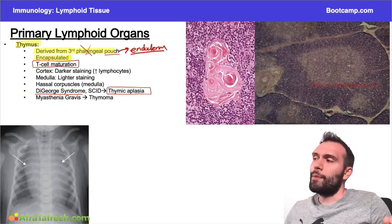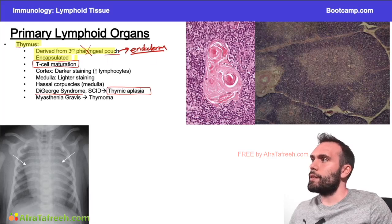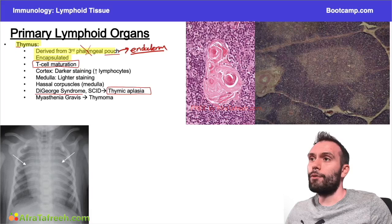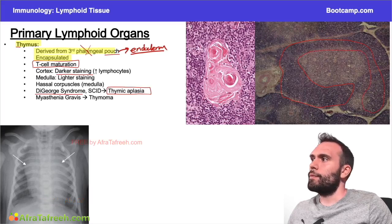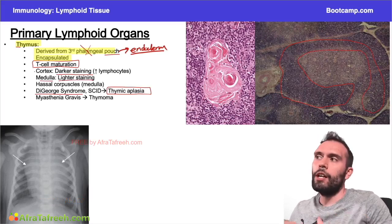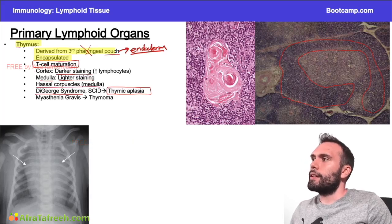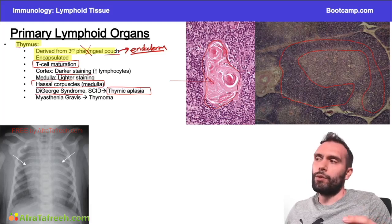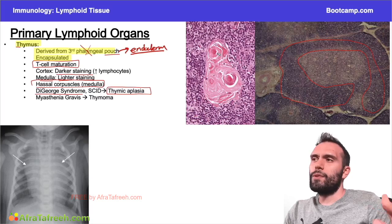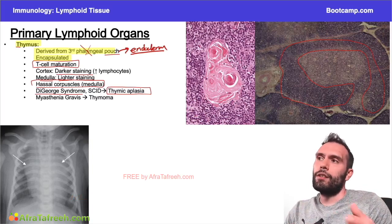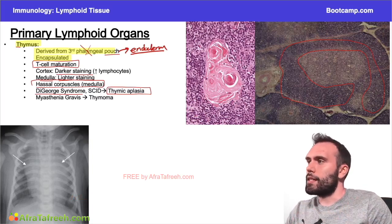The thymus is an encapsulated organ with a thick fibrous capsule. Histologically, the cortex is going to be darker staining with a higher concentration of lymphocytes, and the medulla in the center is lighter staining. One classic histologic image for the thymus is the Hassall's corpuscles — they don't have a very clear physiologic function, but they're located in the medulla and have a characteristic whirling, swirled appearance, somewhat reminiscent of keratin pearls.